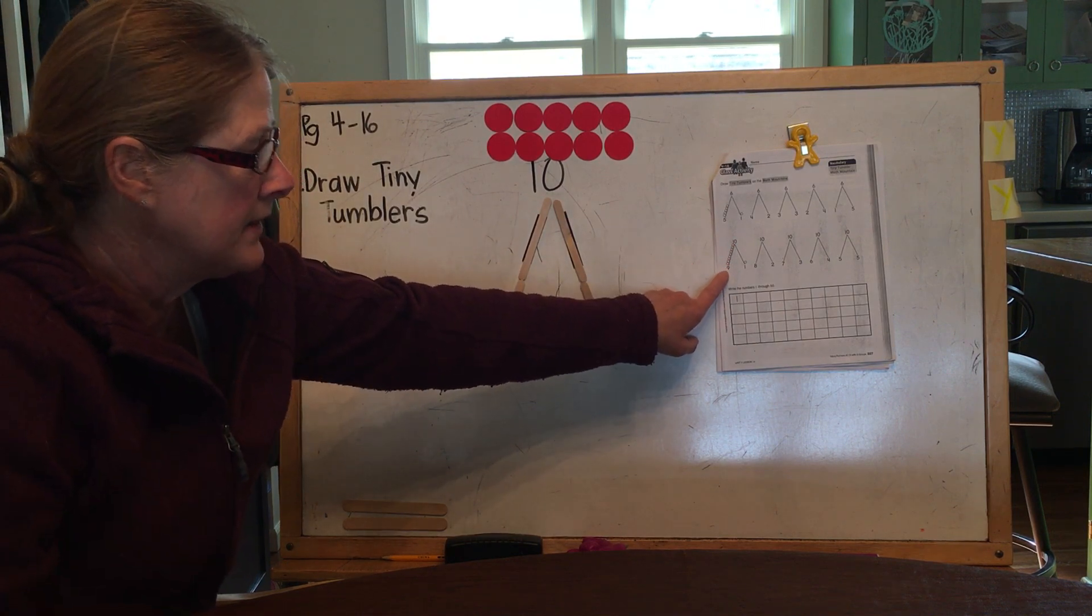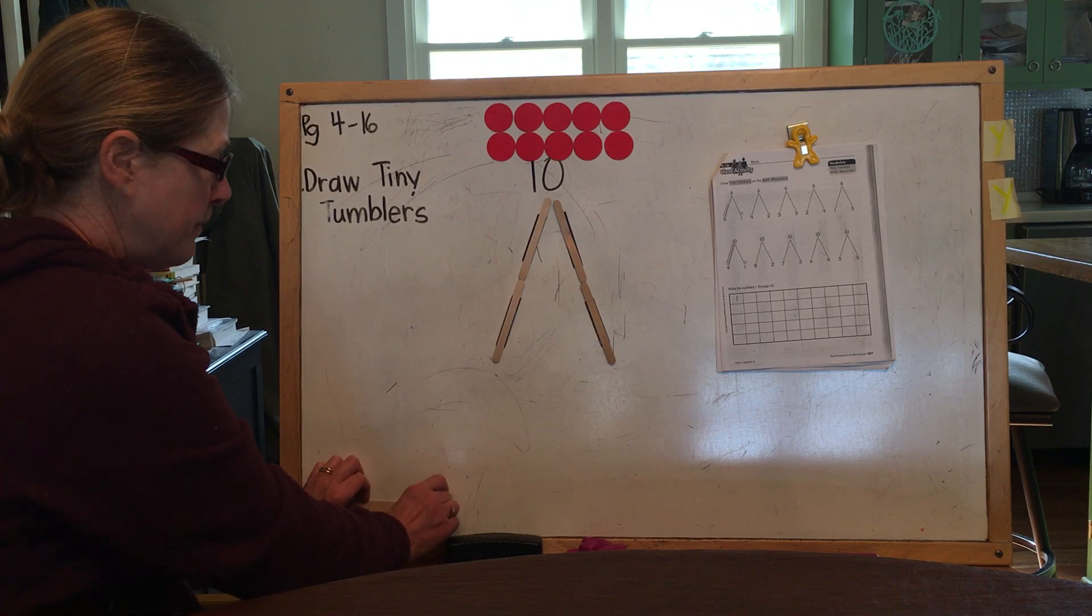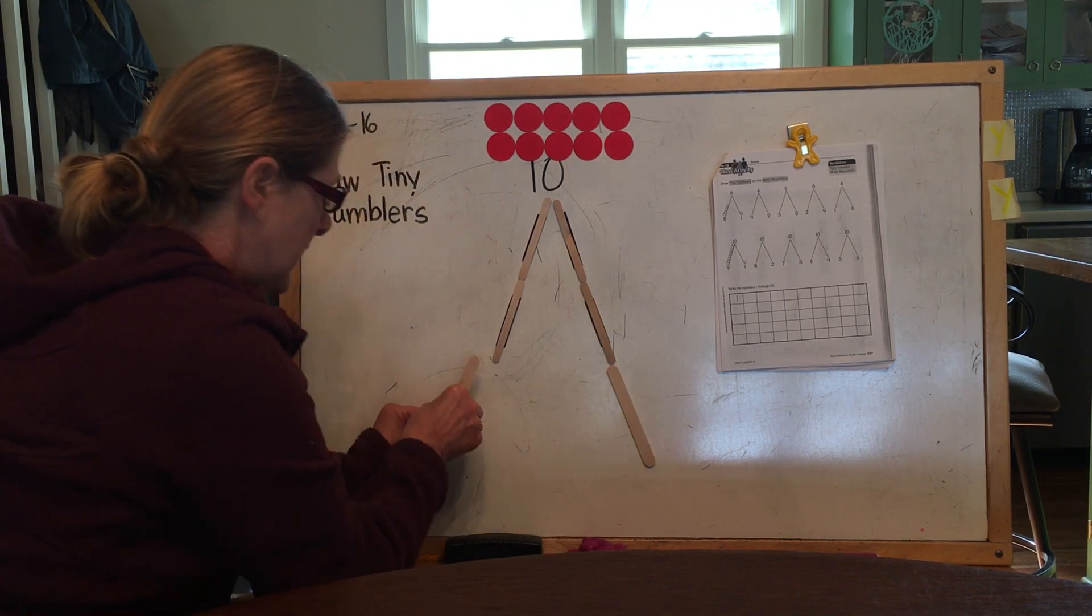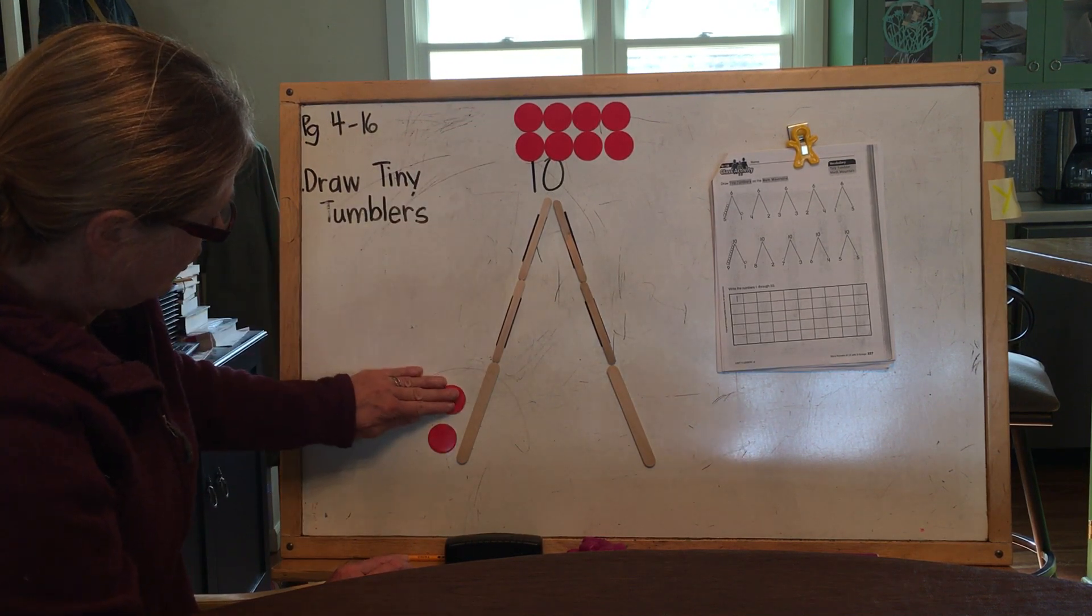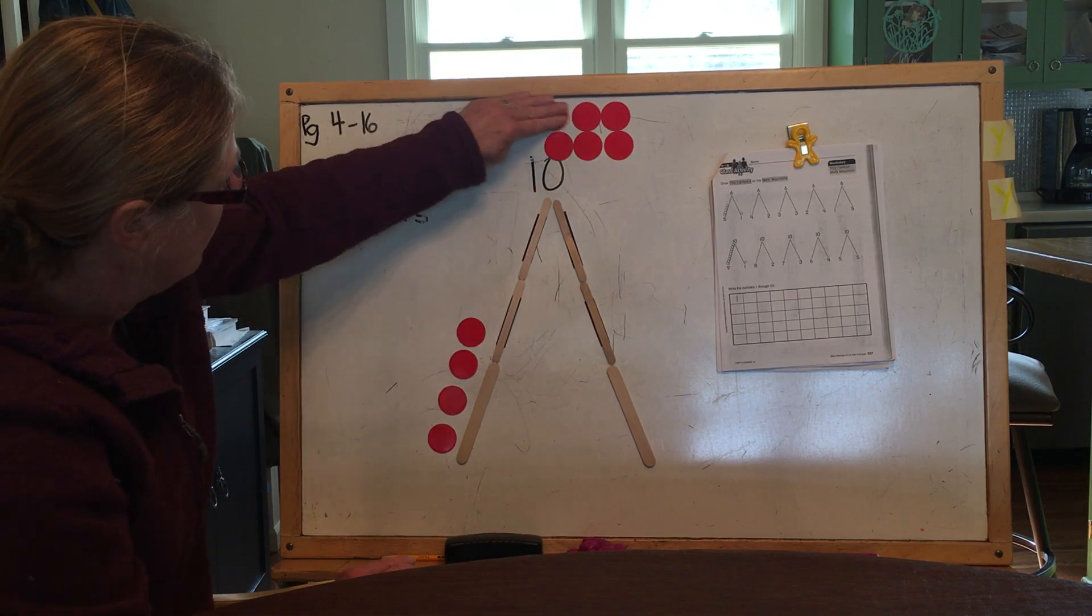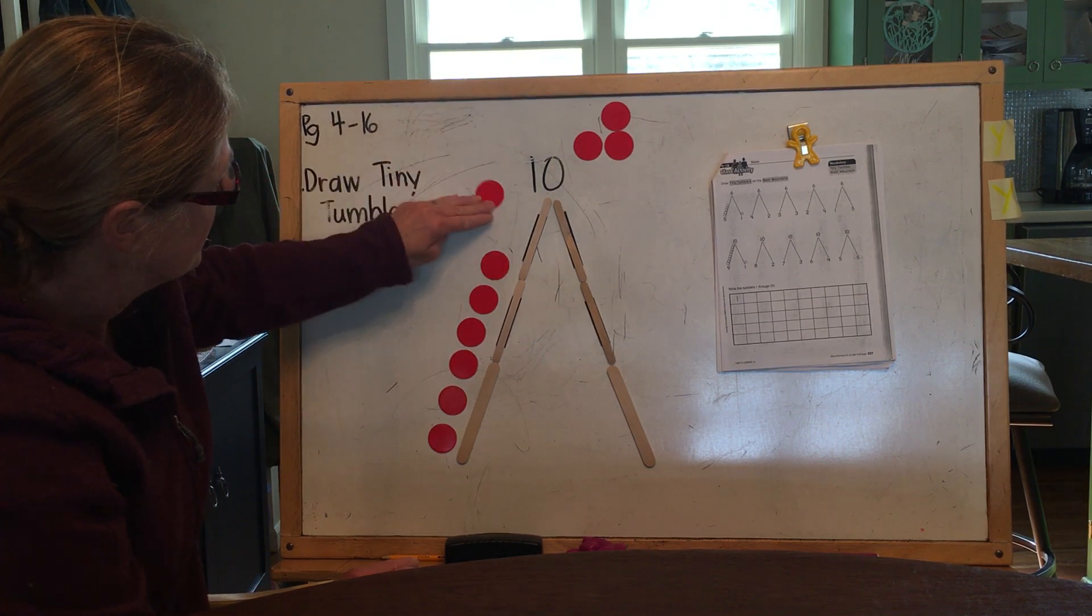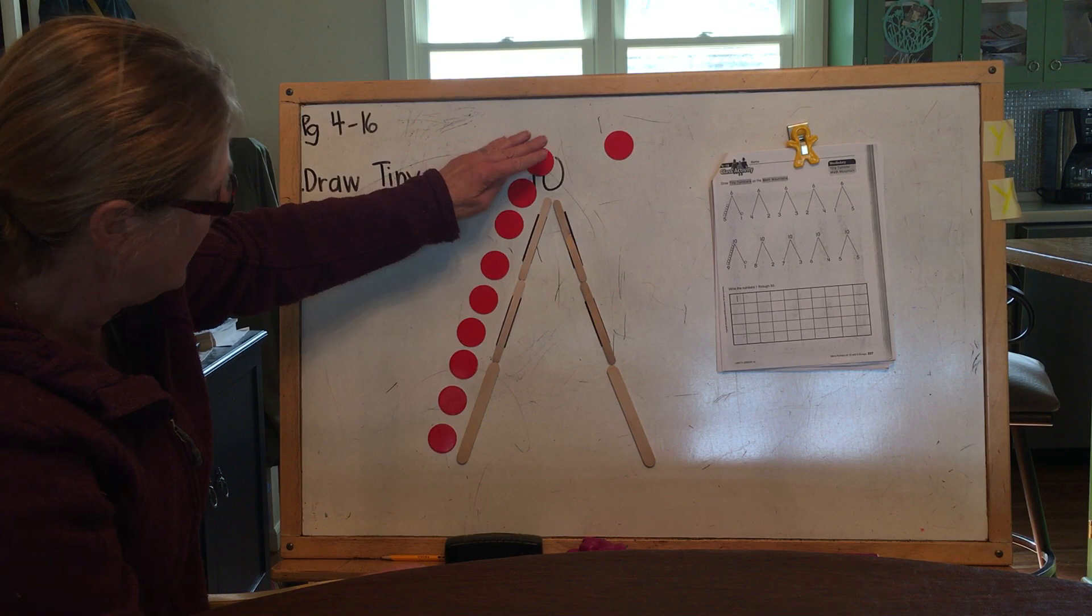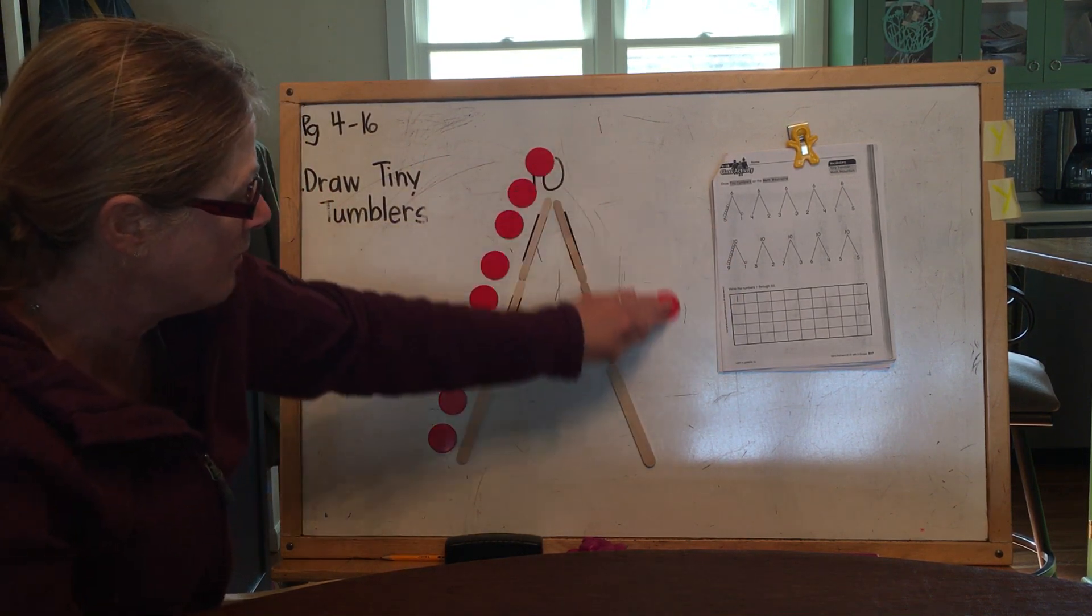They told us in the first example that nine went this way. We're going to have to make a bigger math mountain to accommodate all of those tiny tumblers. So here we go. One, two, three, four, five, six, seven, eight, nine, and then all of the others came this way.